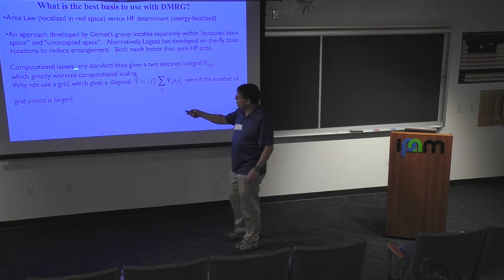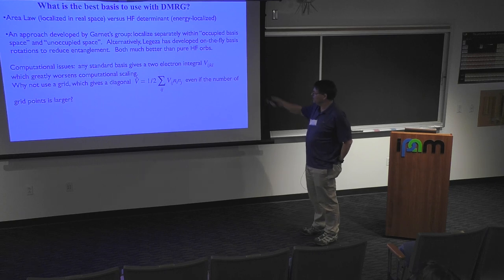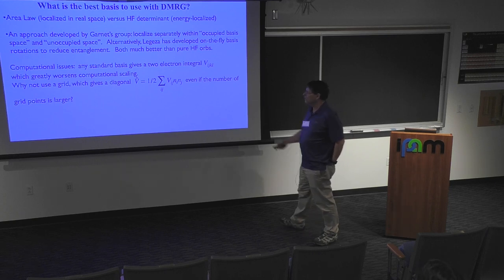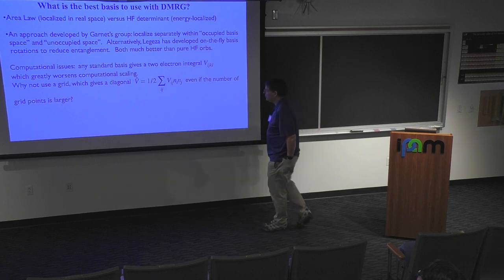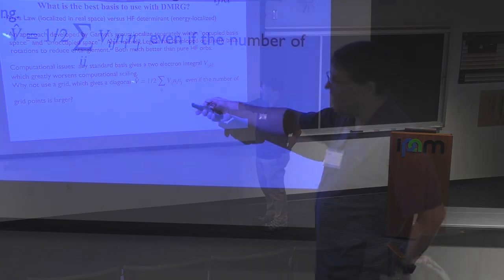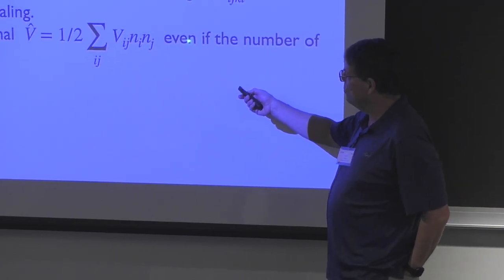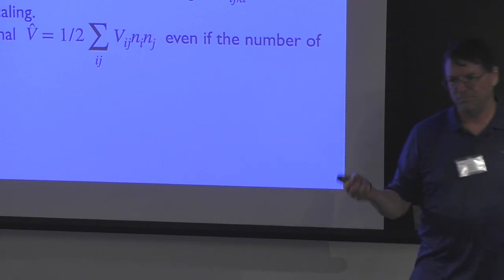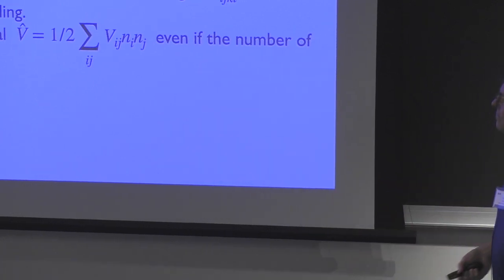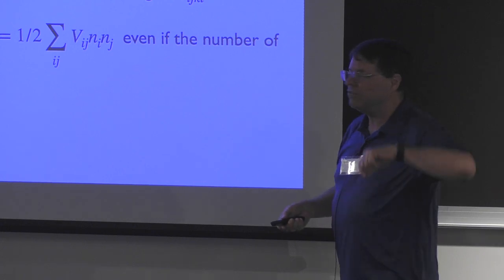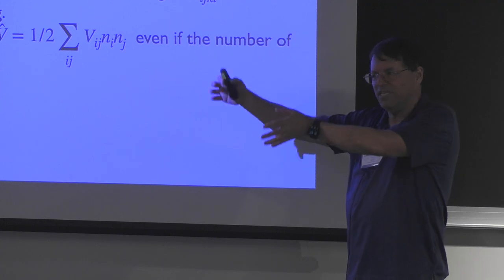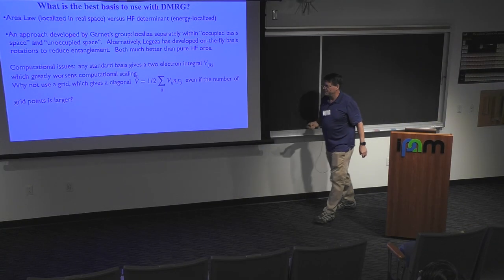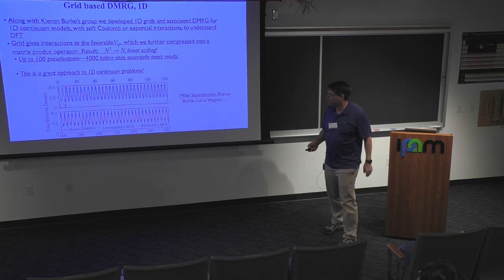There's the separate issue of computational scaling. Any standard basis gives you the two-electron integrals with four indices. If we somehow used a grid, it would use a diagonal representation. The question is how well a grid can work — grids are not as efficient as basis functions and you need more grid points. But you have a big advantage: it maximally exploits one end of the entanglement issue by keeping everything as local as possible.